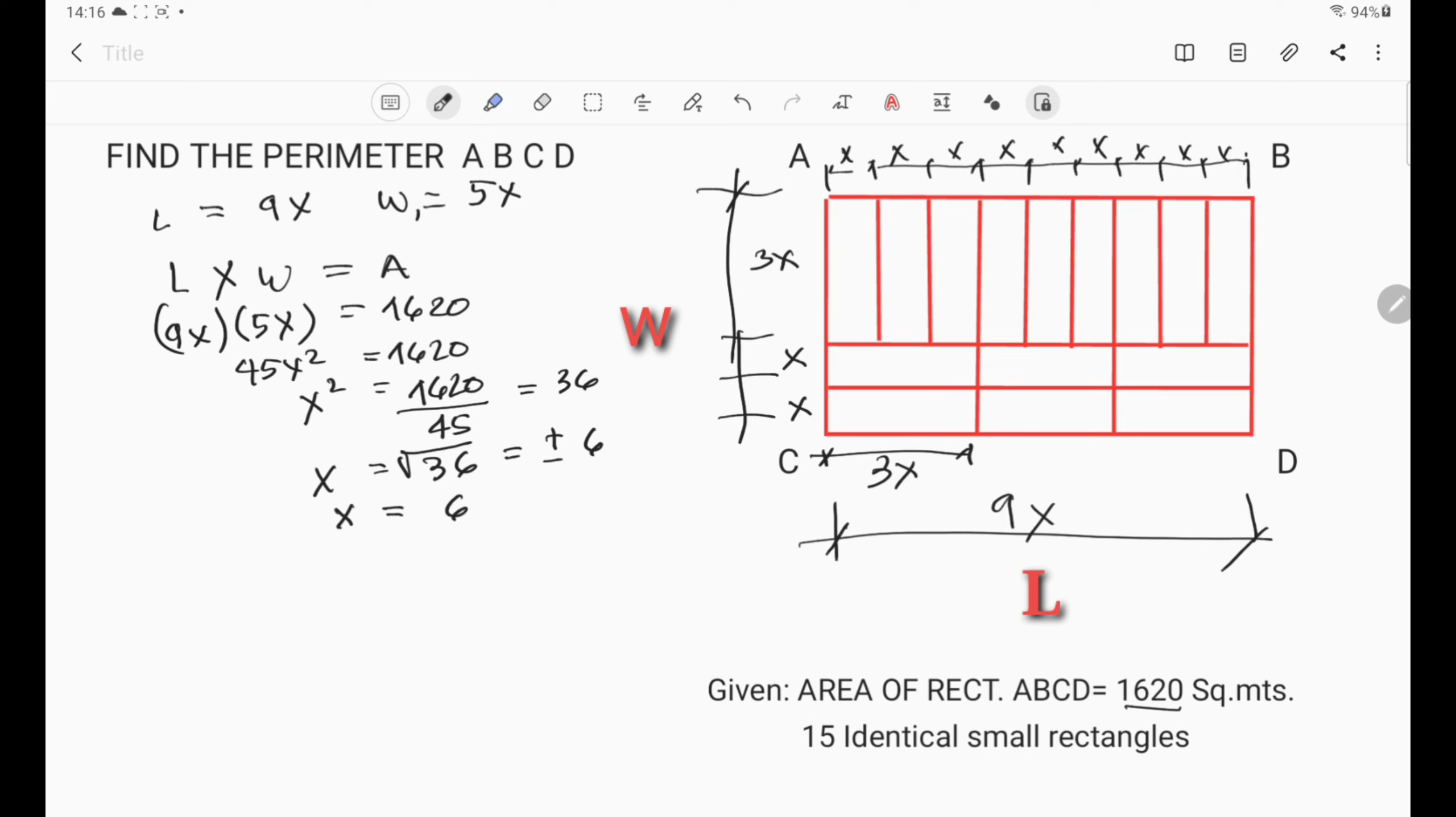Since we solved the value of x, we can now solve the perimeter of rectangle ABCD. So the perimeter is equal to 2L plus 2 width. Perimeter is equal to 2 multiplied by the length which is 9x, plus 2 times the width which is 5x.